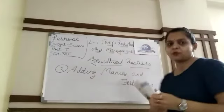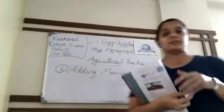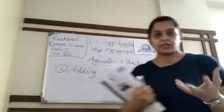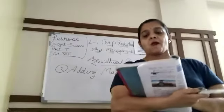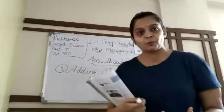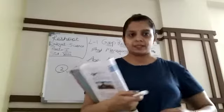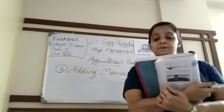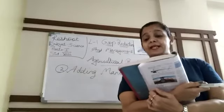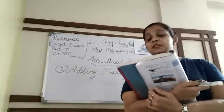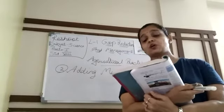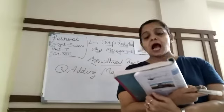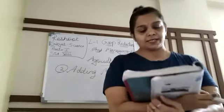Manure kya hota hai? Simply, jaise hum khattar bolte hain — cow dung. Cow dung is one type of manure. Manure is that which is naturally obtained. The substances which are added to the soil in the form of nutrients for the healthy growth of plants are called manure and fertilizer.